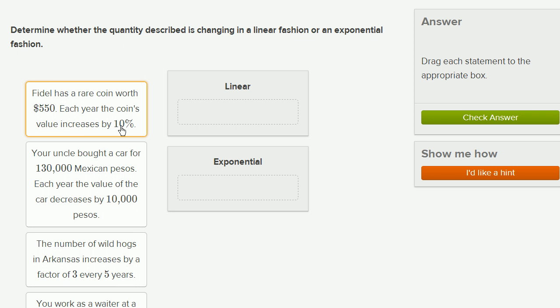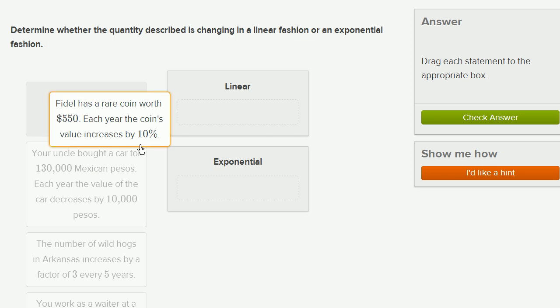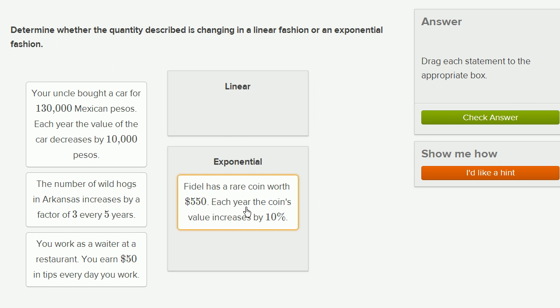Well, this is just like the last example we saw. Every year that goes by, we increase by a factor of 1.1. If we grow by 10%, that's increasing by a factor of 110% or 1.1. So this is definitely exponential. If it was increasing $10 per year, then it would be linear. But here we're increasing by a percentage.